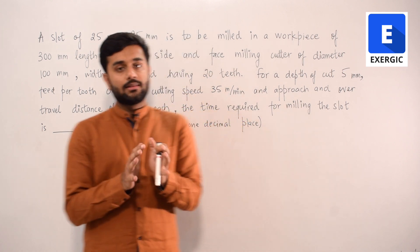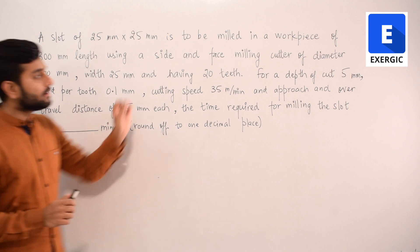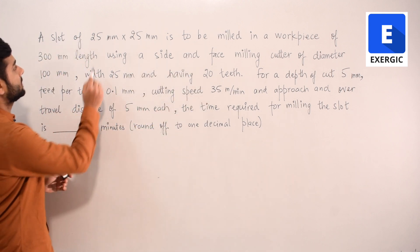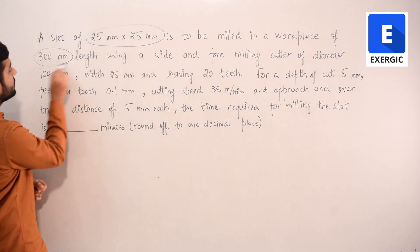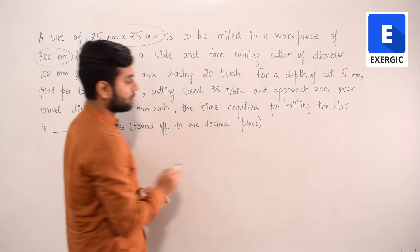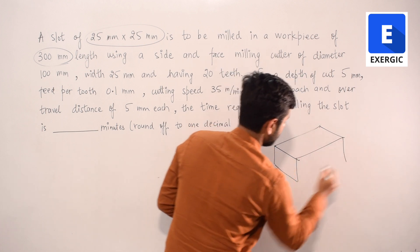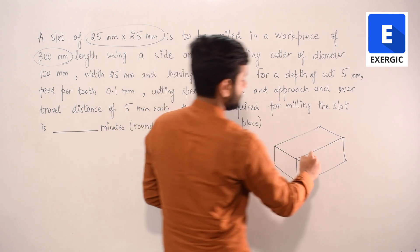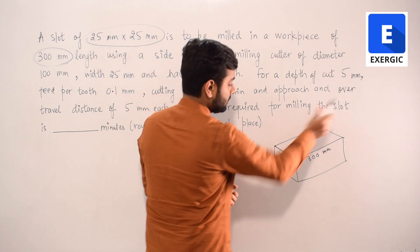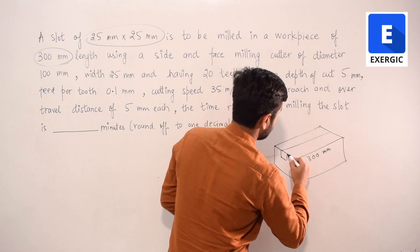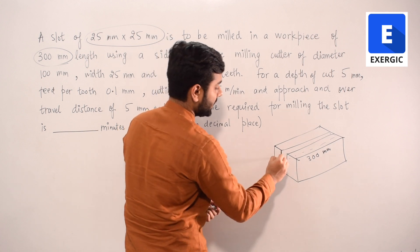The question is from milling. A 25 mm × 25 mm slot is to be milled in a workpiece of 300 mm length. If I show you a general idea of the workpiece: the length is 300 mm, and you need to mill a slot through it. The slot has a dimension of 25 × 25 mm.